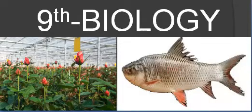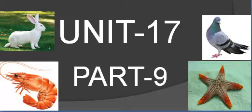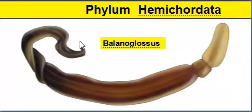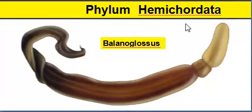Ninth biology, Unit 17, Part 9. In the previous two videos we learned about invertebrates. Invertebrates are animals without a backbone. Phylum Hemichordata is the last invertebrate phylum.